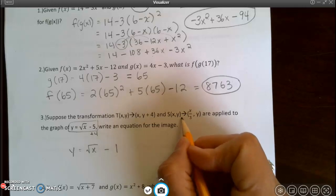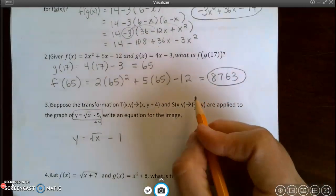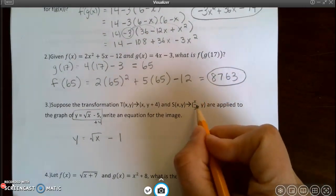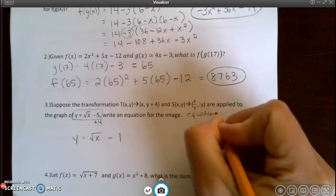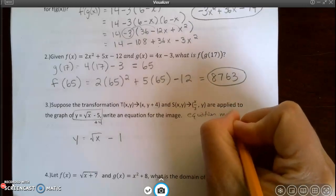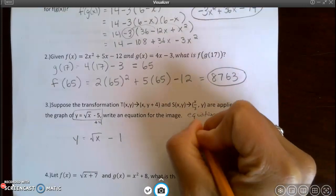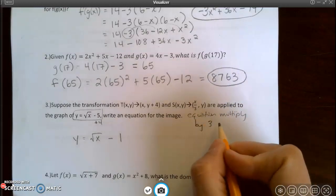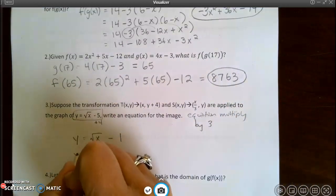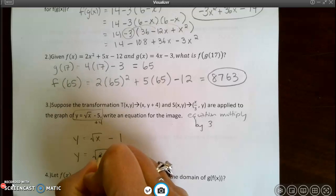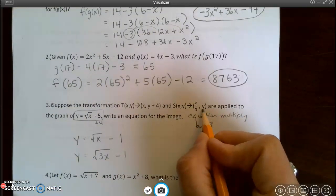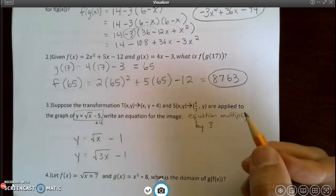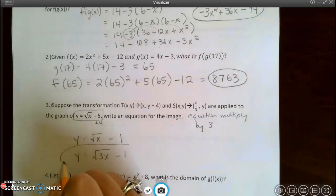Then I come to the scale change. And the scale change says divide x by 3, which means in the equation I want to multiply by 3. So y equals the square root of 3x minus 1 plus 4. And then don't multiply the y by anything. So there is my answer.